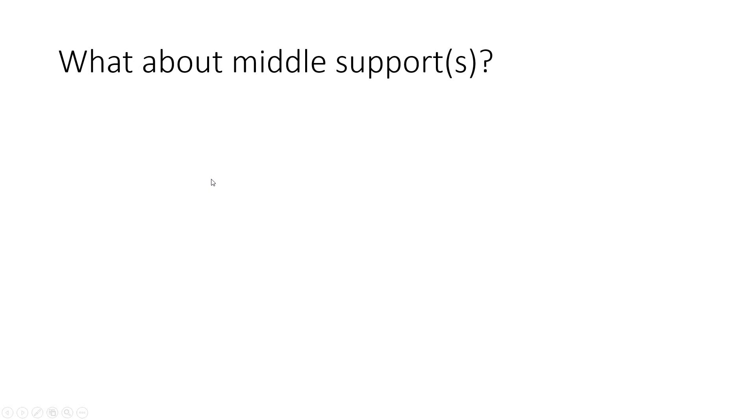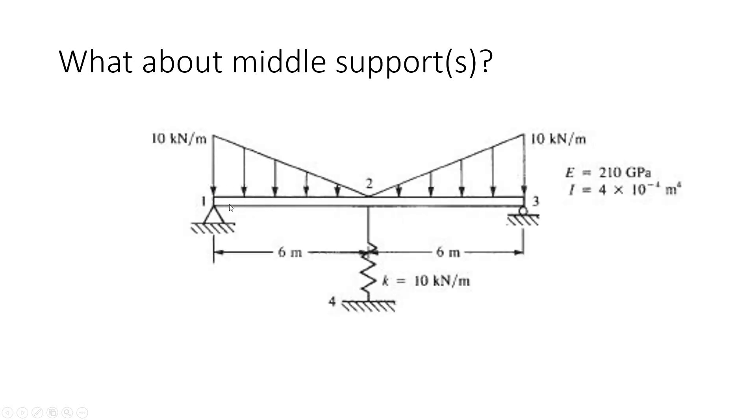What about middle supports? If you have a problem like this, if you have distributed loading on the left side of the node and the right side, what happens at this middle node? And it's actually quite simple. You combine loading from both sides and sum them together to obtain a net loading.